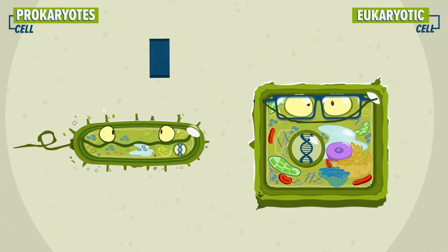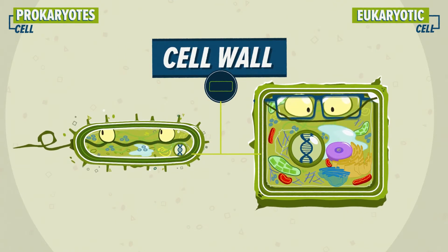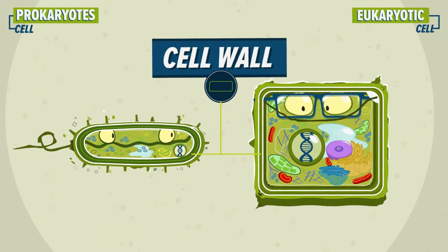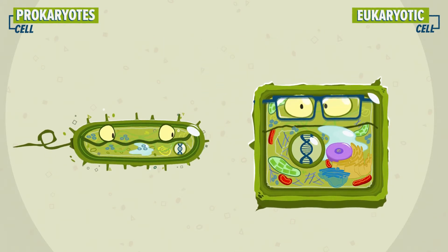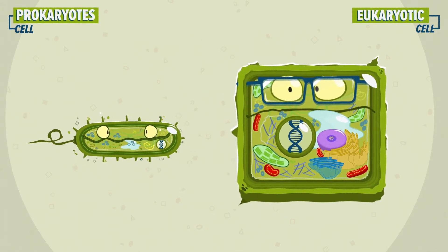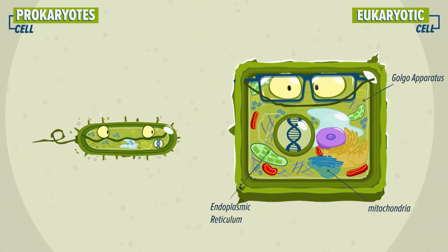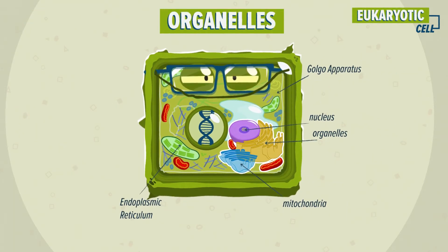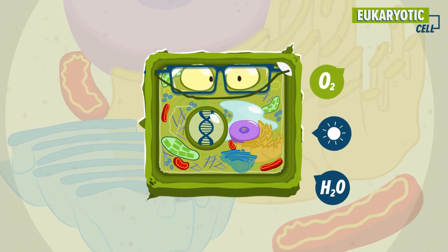Most prokaryotes have a cell wall. Most eukaryotic cells, like plant and fungal cells, also possess cell walls, but animal cells, for instance, do not. However, there are also some big differences. Eukaryotic cells are larger and more complex. They have membrane-bound organelles and a nucleus. This way, eukaryotic cells can carry out more complex functions compared to prokaryotic cells.